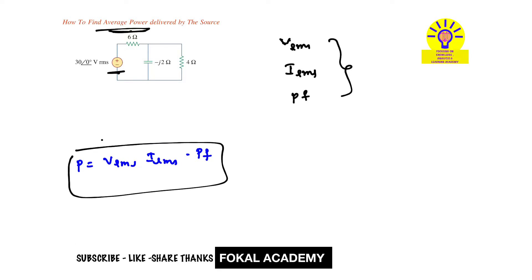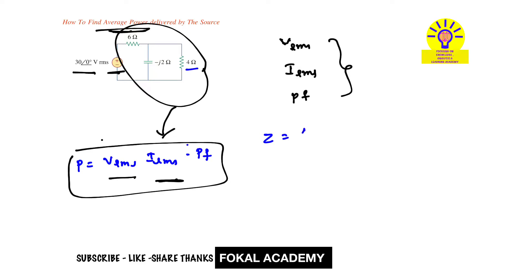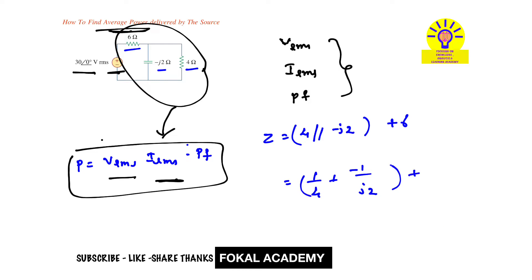We know the RMS voltage is 30 amplitude with 0 degree phase. To find the RMS current, we first need the overall impedance of the circuit. Overall impedance Z equals 4 ohms in parallel with minus j2 ohms, and in series with 6 ohms. This becomes 1 over (1/4 plus 1/(minus j2)) plus 6. By simplifying, we get Z equal to 6.8 minus j1.6.